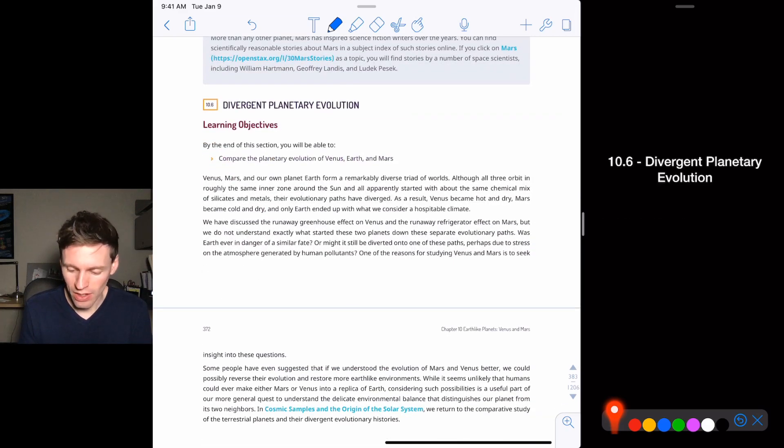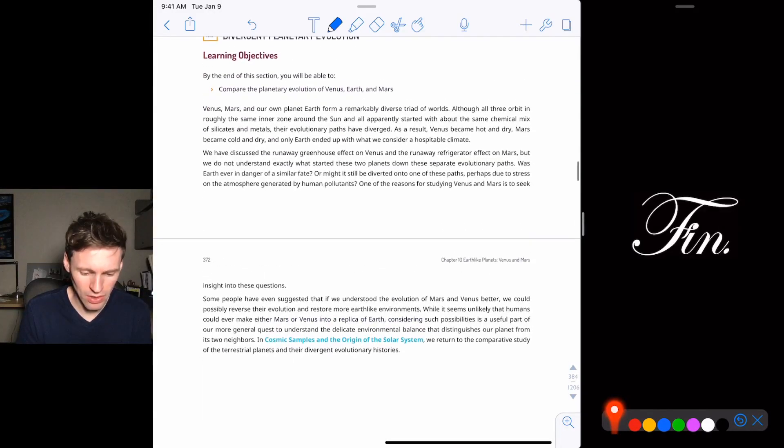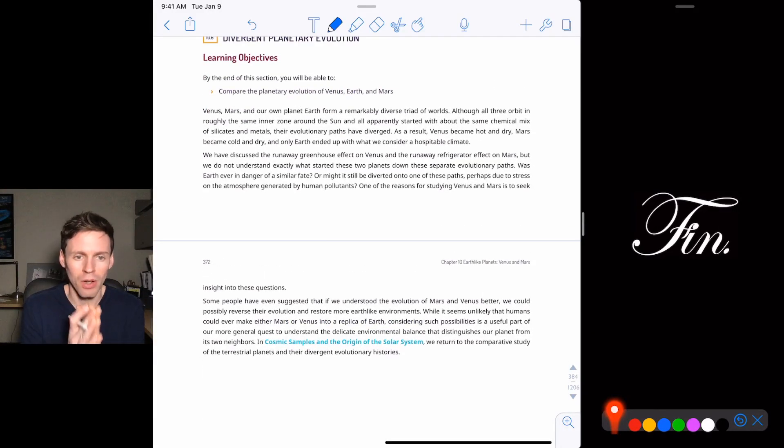Okay. So the divergent planetary evolution is we want to compare the evolution of Venus, Earth, and Mars. And there's not a, there's just this, like, two paragraphs here. Basically, Venus runaway greenhouse effect, super hot. Mars runaway refrigerator effect, super cold. Earth somehow threaded the needle, had a nice environment for life to start, and then changed the atmosphere so that it wasn't scorching hot or frozen. And now we have this wonderful kind of temperate planet with liquid water on its surface. It's kind of amazing.